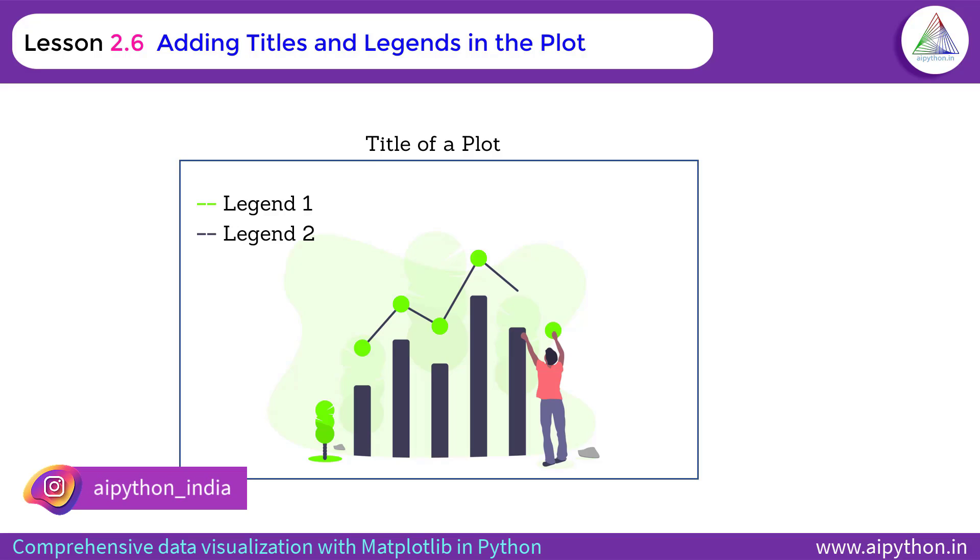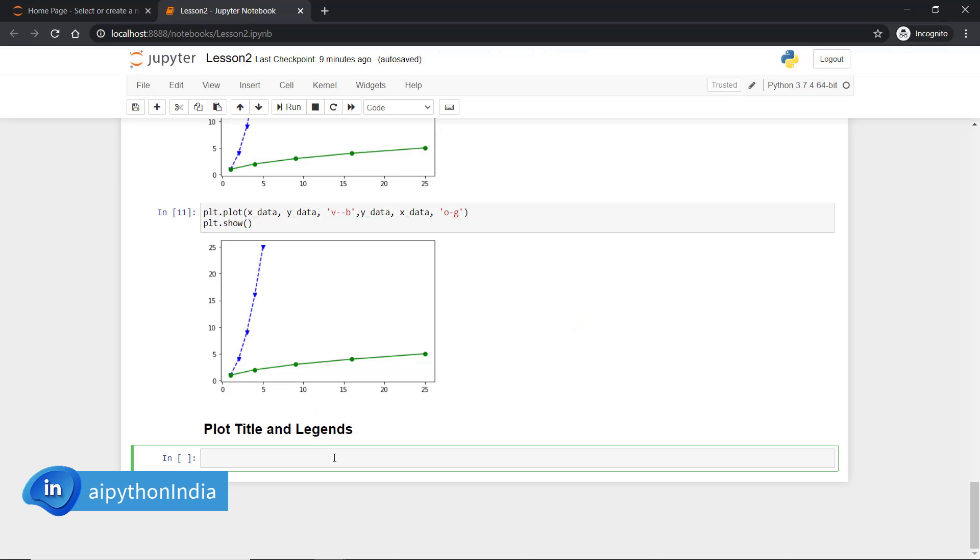All the components of the pie plot will be covered by covering these two topics. Let's jump to the Jupiter notebook or simply a notebook where we will learn how to put a title on the plot. I have already marked the cell. I am going to work on title and legends in this section.